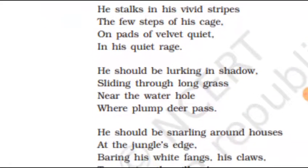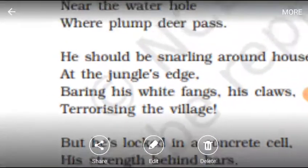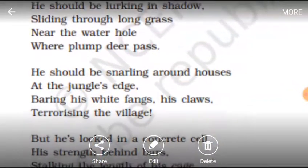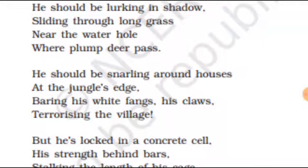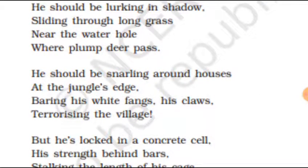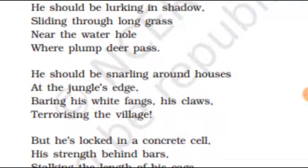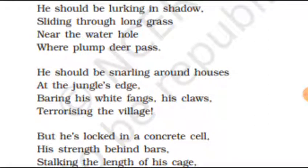In the first stanza we saw he was inside the cage in the zoo. In the second stanza the poet describes what the tiger would do if it were out of the zoo. In the third stanza, he should be snarling around houses near the jungle. If he were out of the cage and free, he would go to nearby villages near the forest and terrorize the people, making them fearful with his claws and his white fangs.